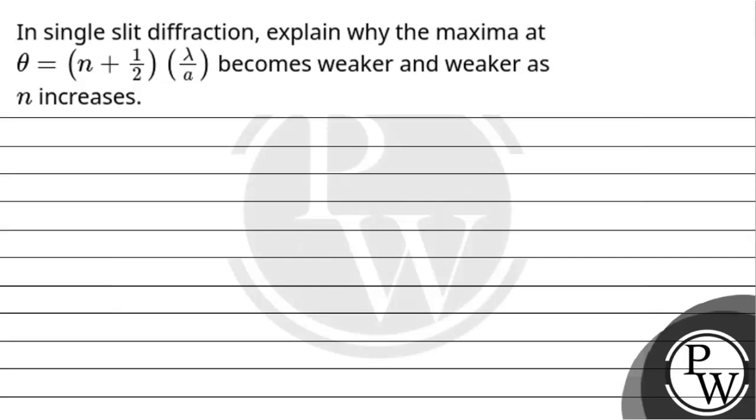Hello, let's read out the question. Question says in single slit diffraction, explain why the maxima at θ = (n + 1/2)(λ/a) becomes weaker and weaker as n increases. So after we have diffraction by the single slit, we need to explain why maximum (n + 1/2)λ/a becomes weaker as we increase the value of n.